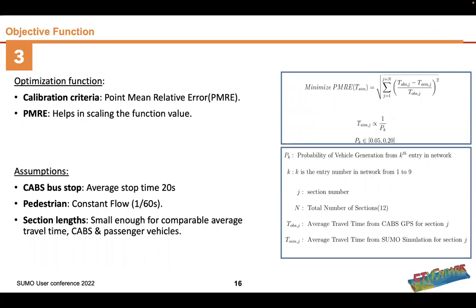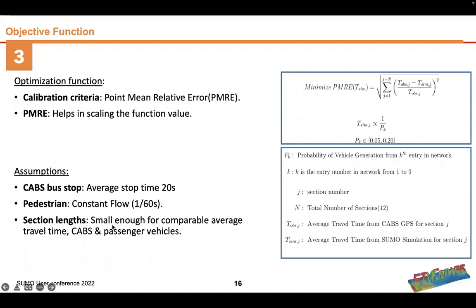The optimization function we used was PMRE — the Point Mean Relative Error. The travel time observed from the actual data was compared with the simulation, under the assumption that simulated travel time would be inversely proportional to the probability of vehicle generation: more vehicles means more travel time, so the simulation probability is proportional to that. For the CABs, the bus stop average stop time was 20 seconds. For pedestrians, since we don't have data, a constant flow of pedestrians was assumed at intersections. Section length was small enough for comparable average travel time between CABs and passenger vehicles, since passenger vehicles cannot overtake CABs if they are ahead.